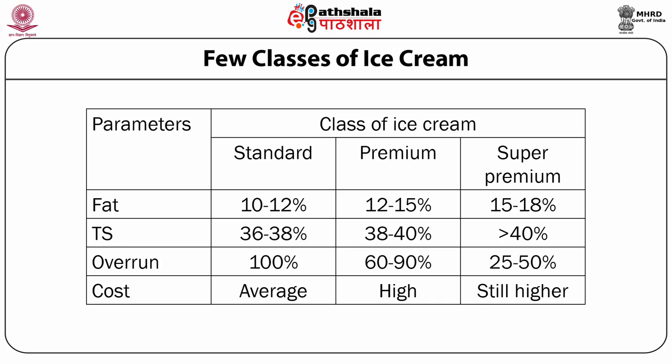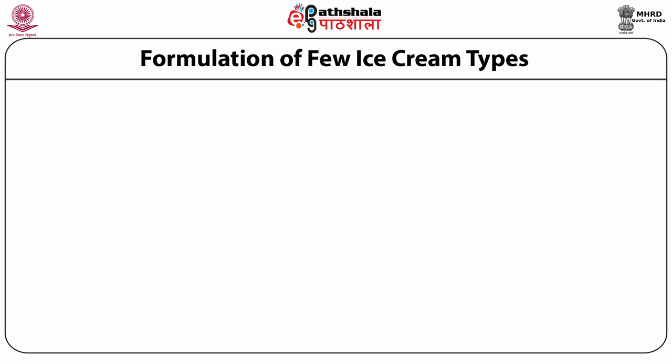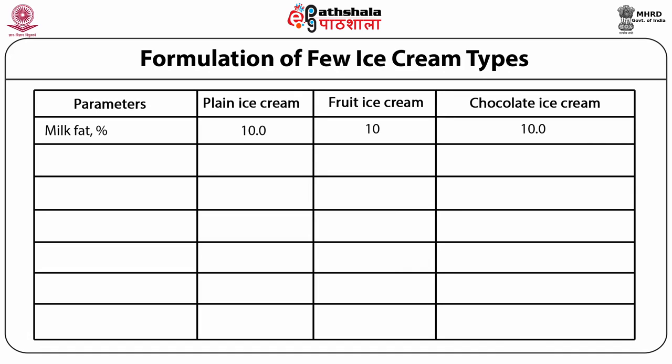The relative cost increases with fat content since milk fat is the costliest component of milk, so super premium ice cream costs more than standard. The next slide shows the formulation of a few ice cream types. I have given formulations for three main types: number one, plain ice cream such as vanilla; number two, fruit ice cream such as strawberry, mango, or litchi; and number three, chocolate ice cream using cocoa powder or chocolate liquor as flavoring.